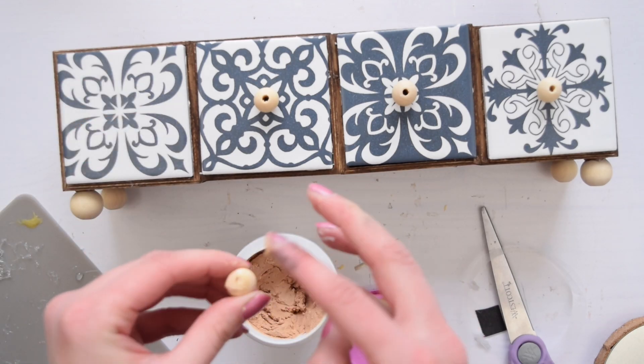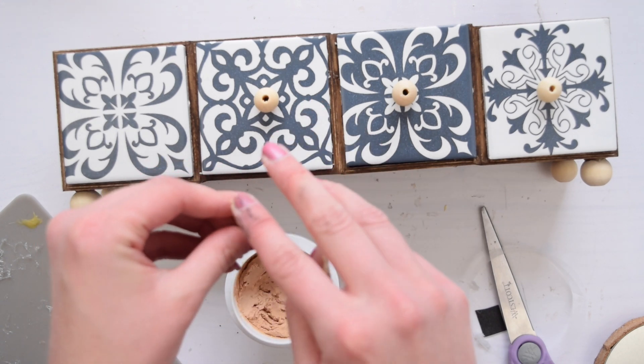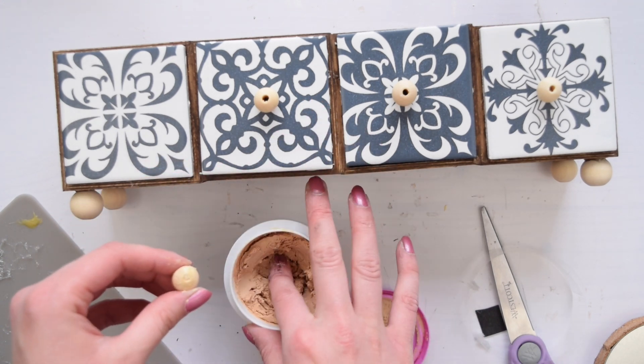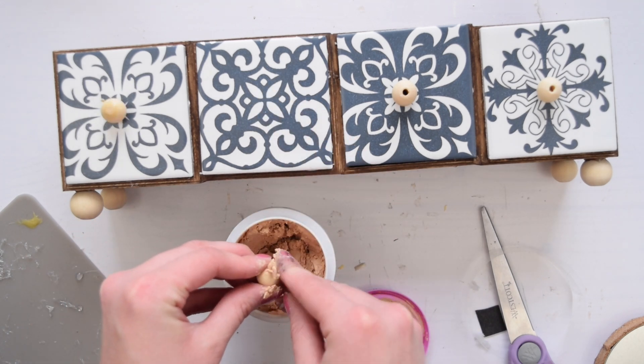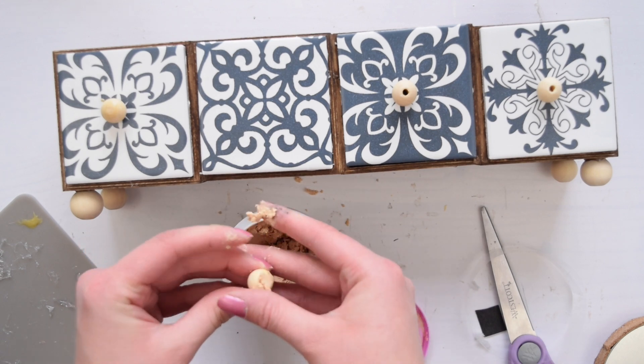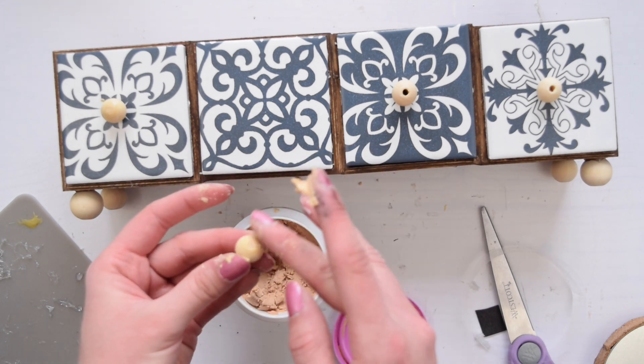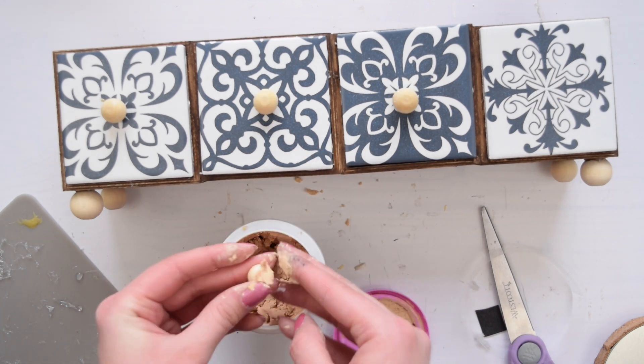And I also took some smaller wood beads and used some more of that wood filler to fill in all of the holes in them because I wanted to make some knobs for the drawers. And then off camera I stained the feet and the knobs with that early American stain and then glued on the knobs using E6000 glue.